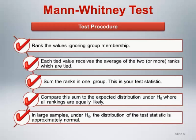In large samples, under the null hypothesis, the distribution of the test statistic is approximately normal or Gaussian. Many software packages, including StatCrunch, use this approximation to calculate the Mann-Whitney p-value, provided the samples are large enough. StatCrunch indicates in the test results when this approximation has been used. In smaller samples, an exact approach based on the actual distribution of the ranks is used, the details of which we won't discuss here.